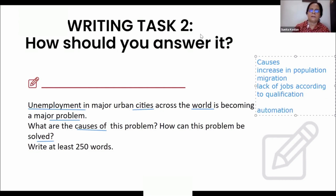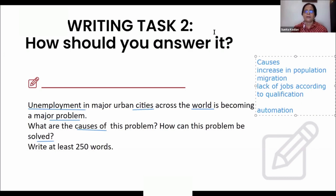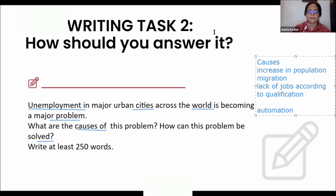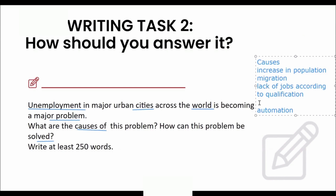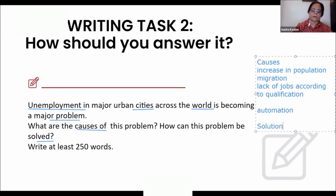Automation is also a major cause. In banks, earlier someone would count money and clear checks; now one just goes to the ATM. Companies feel robots can do the work faster and they won't have to spend as much. Because of automation, human beings are not needed for those jobs — employers feel machines can do that work faster.